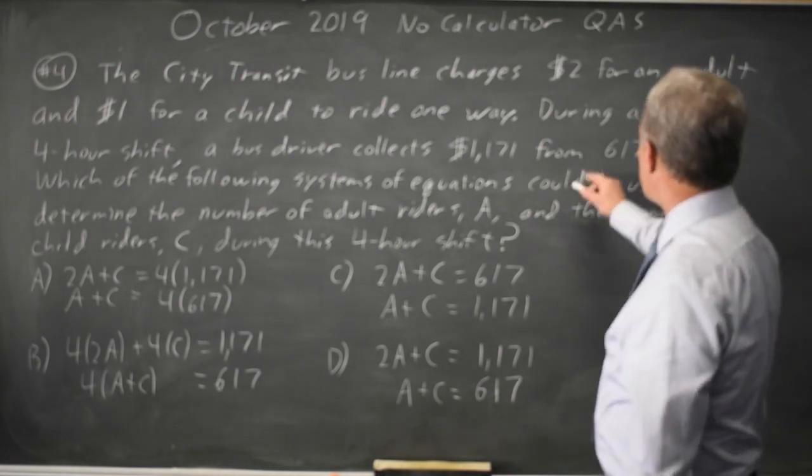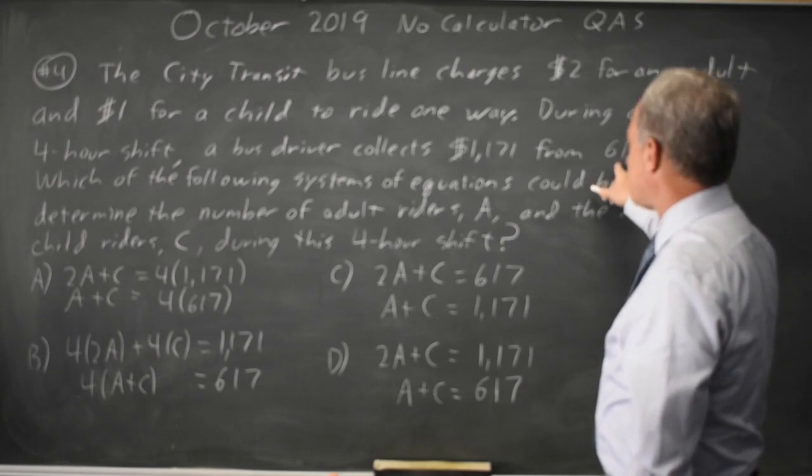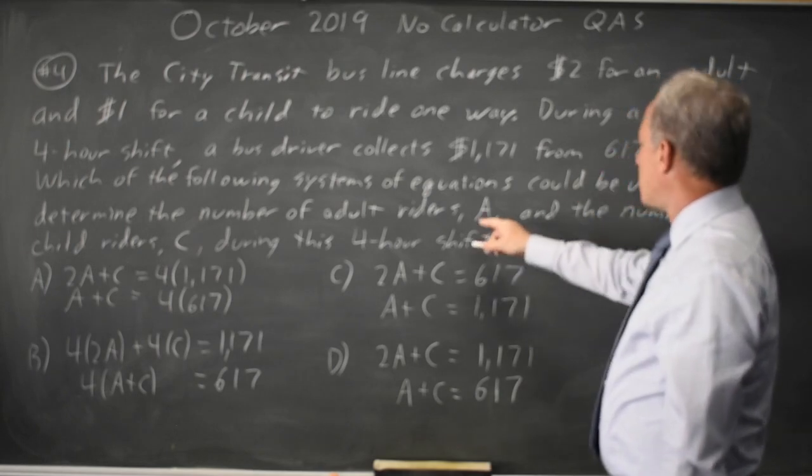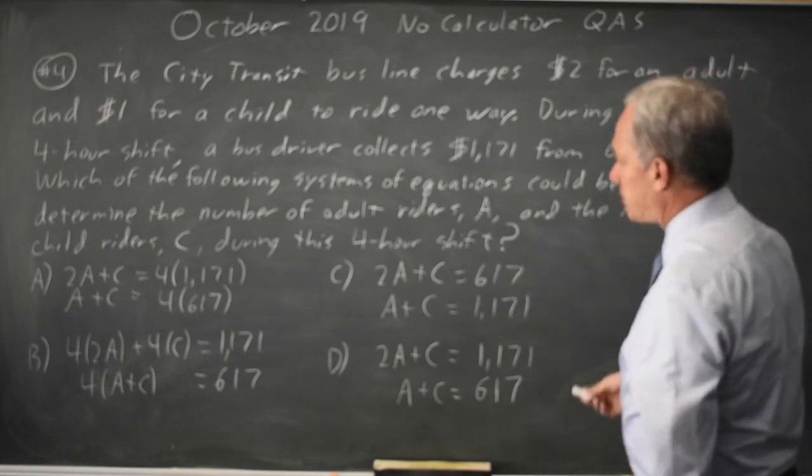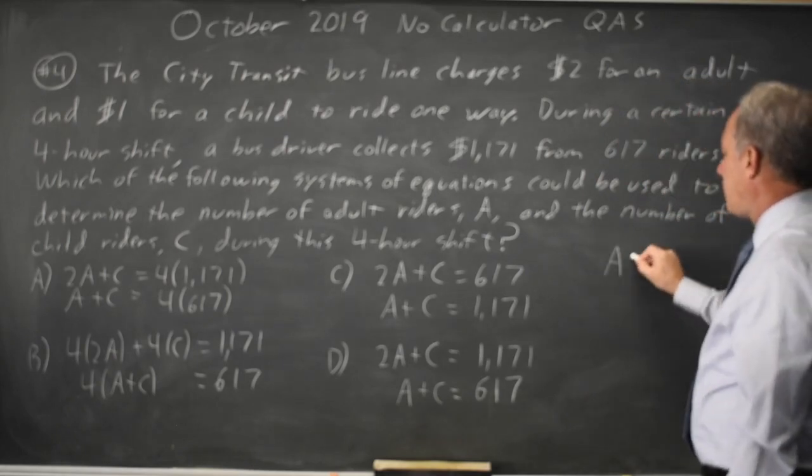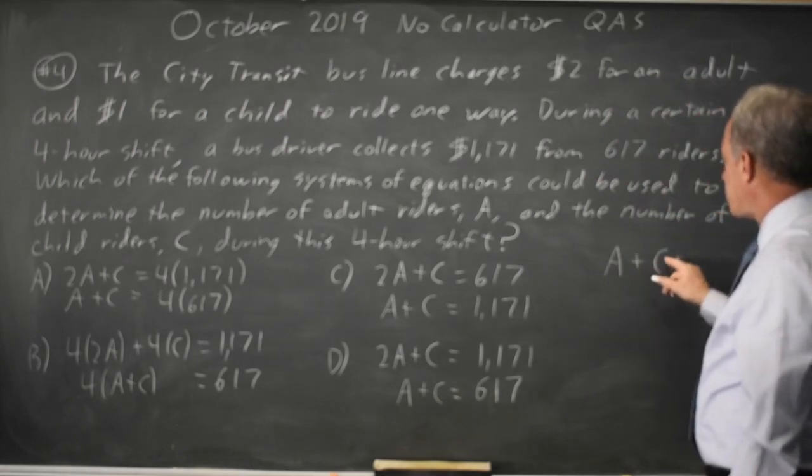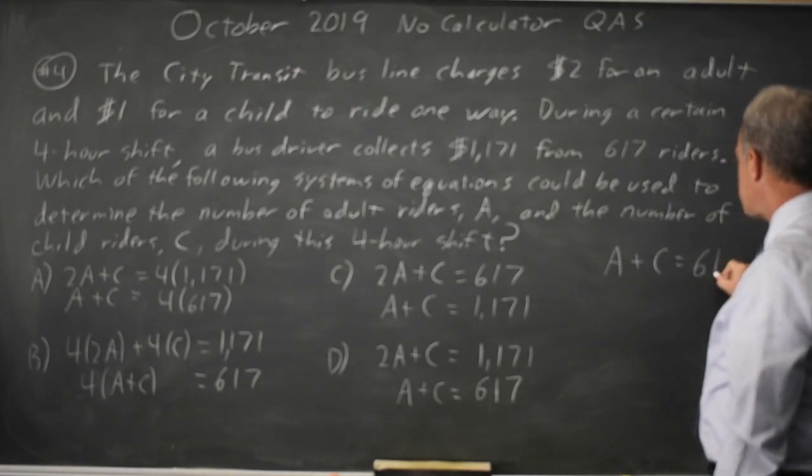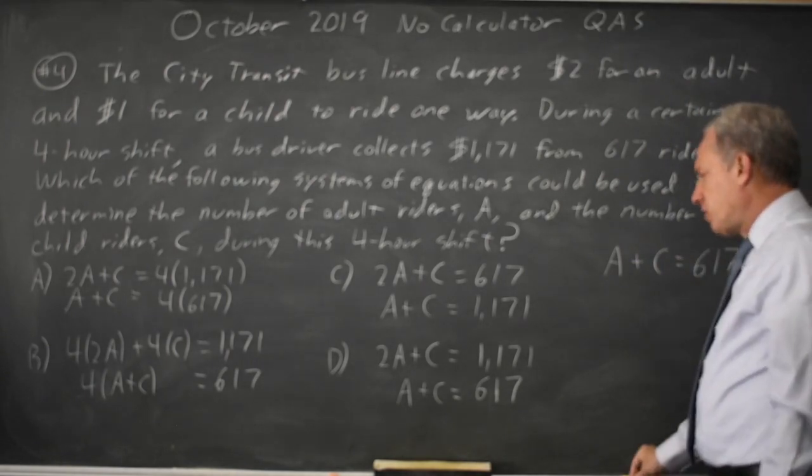We're told that the total number of writers is 617 and the number of adult writers is A and the number of child writers is C. That gives you A plus C is adult writers plus child writers equals total writers 617.